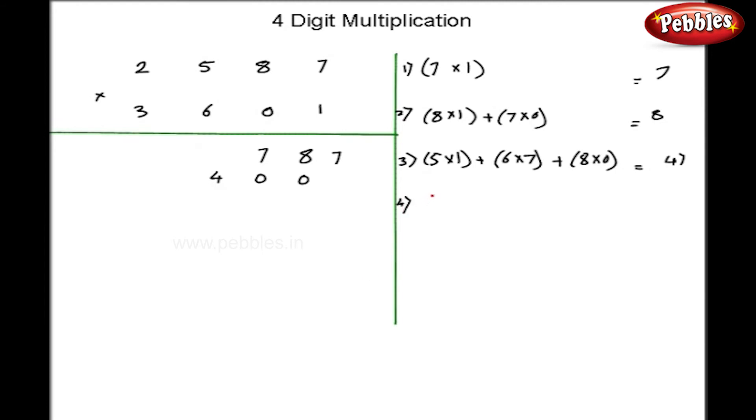As a fourth step, I will do 1 into 2 plus 3 into 7 plus 5 into 0 plus 6 into 8. So, here my answer is 71.